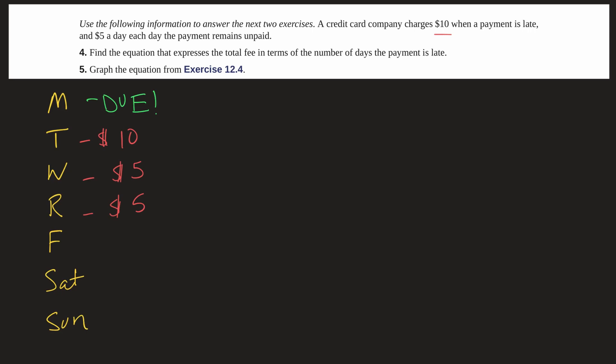So it asks us find the equation that expresses the total fee in terms of the number of days the payment is late. Well we know that the fee equals the initial $10 for being late plus $5 per day. Now whenever you see that per day or per hour per whatever you know that that's what's changing. So here our independent variable is time. It's not the fees.